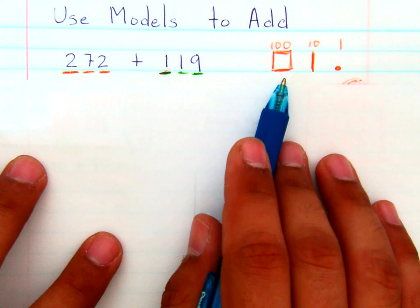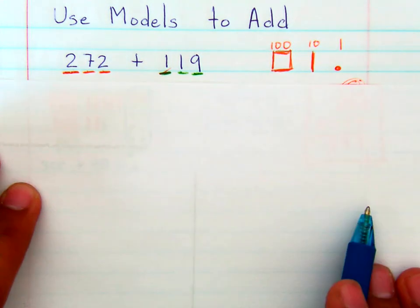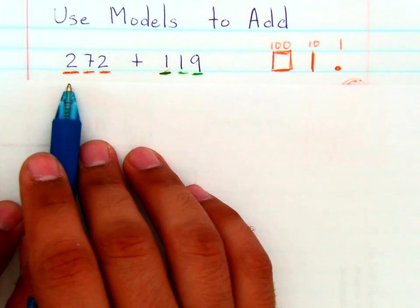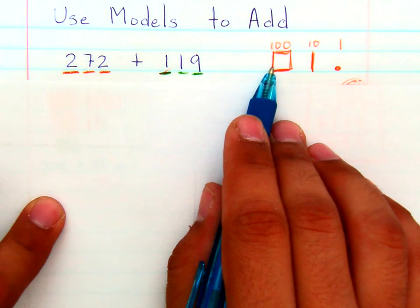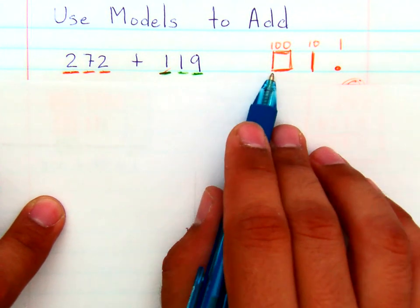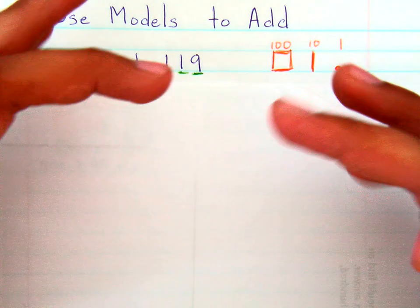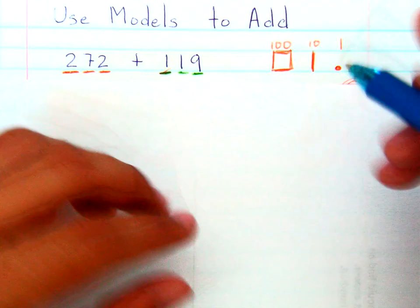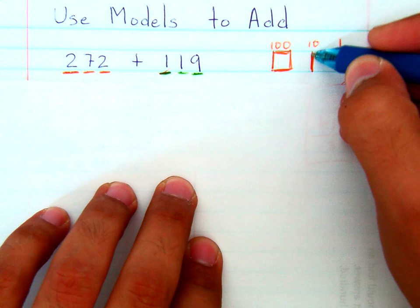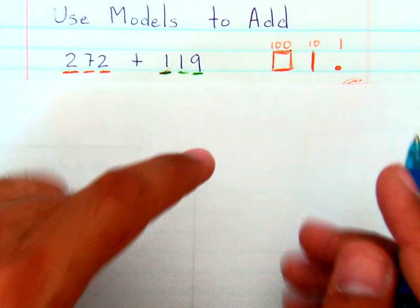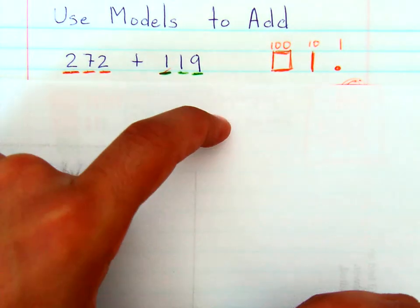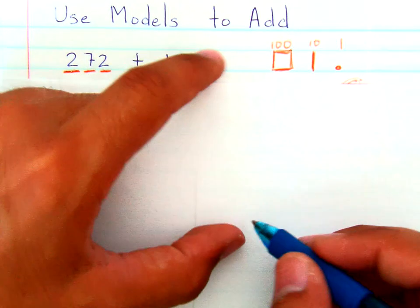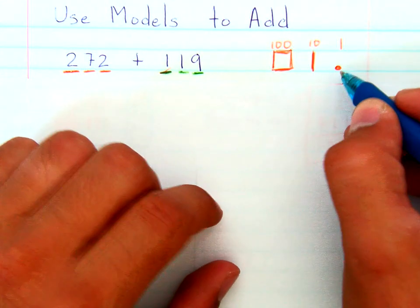Now, we're going to get to all of that step by step, but I want to show you that this base 10 block, this square, is often a plate, an object that students can use. And this line right here that represents 10, is often a rod or a stick showing 10 units, and this is often a single cube.